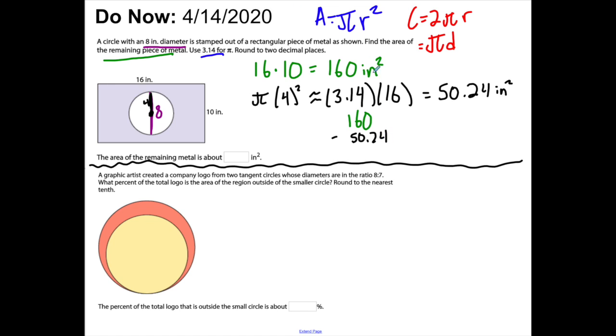That represents the area of the inner circle. On my calculator, I'm going to do 160 minus 50.24. You could use Google calculator, Desmos, or Wolfram Alpha if you don't have a graphing calculator at home.